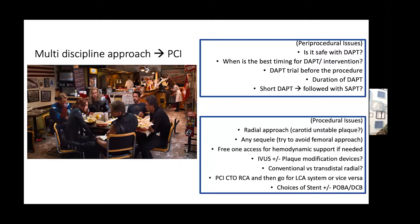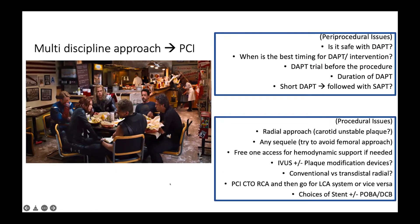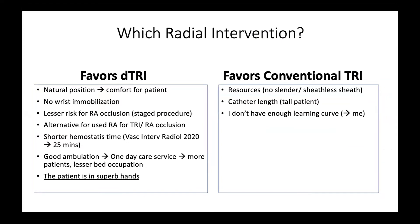Kemudian apakah ada sequelae karena stroke-nya — misalnya saya pribadi menghindari femoral approach. EF 34%, CTO, apakah perlu hemodynamic support — saya rasa mungkin belum perlu, tapi perlu dipertimbangkan satu akses femoral yang kosong untuk misalnya IABP. Tentunya alat-alat device tambahan, dan tentu akses yang nanti akan dibicarakan oleh dokter Munawar: apakah konvensional, transdistal, apakah kita menuju ke PCI CTO RCA atau sebaliknya. Dan scan juga menjadi pertimbangan — jadi banyak hal yang harus dipertimbangkan bagi operator.